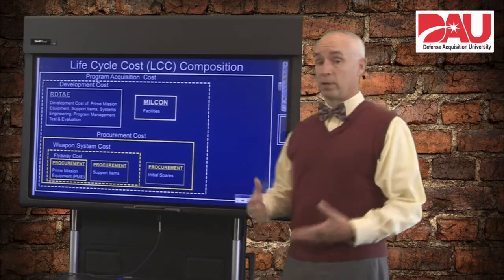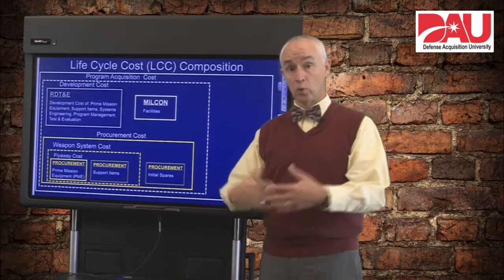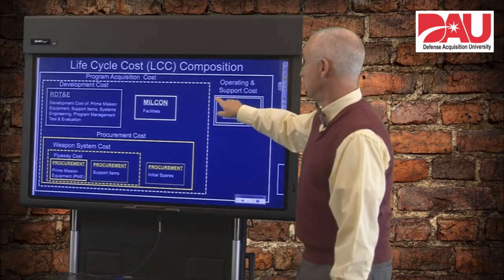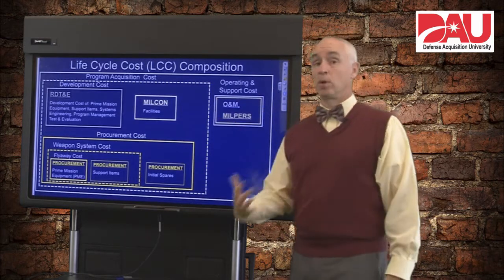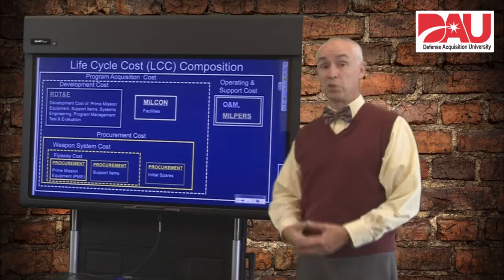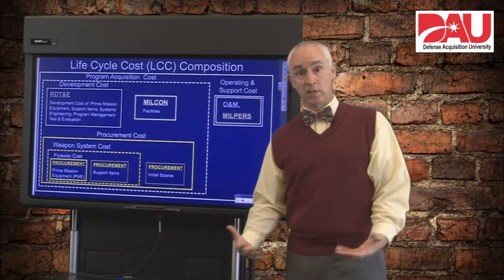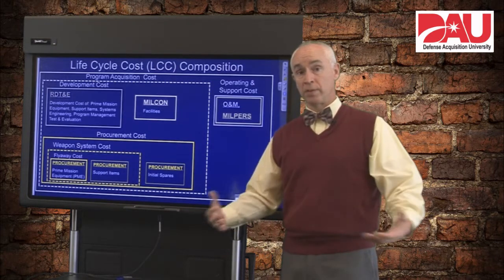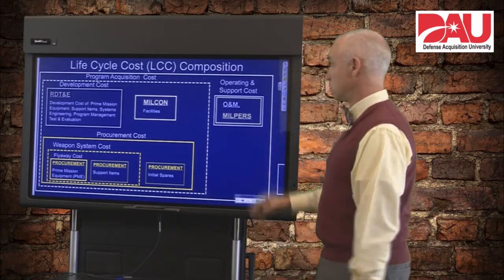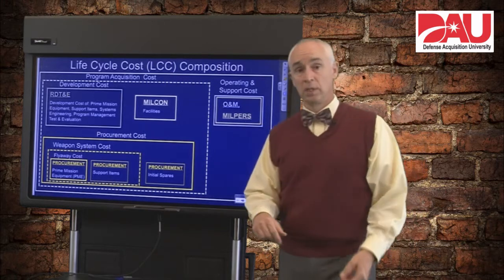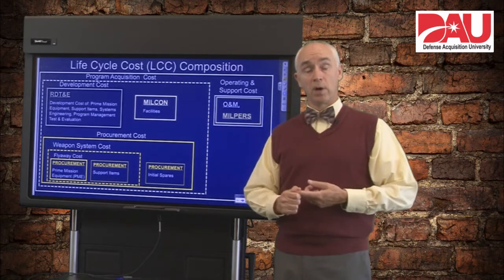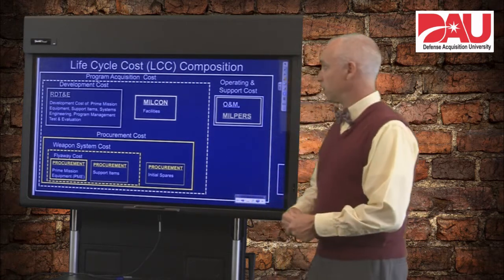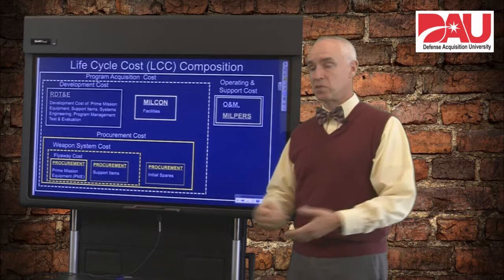We also have a couple of other things that go into the total life cycle cost. First here is operating and support costs, and these tend to be, quite frankly, the majority of the life cycle cost of the system, because we're often operating and supporting a system for 20, 30, or 40 years. So this tends to get very expensive. Those costs include all of your operations and maintenance costs — things like parts, fuel, and running and maintaining the system.